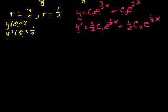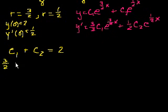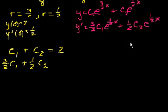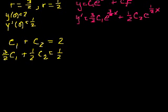Substituting x equals 0 into y: we get c1 times e to the 0, which is 1, plus c2 times e to the 0, which is 1, equals 2. So c1 plus c2 equals 2. Then substituting x equals 0 into the derivative: 3 halves c1 plus 1 half c2 equals 1 half. Now we have two equations in two unknowns, and we can solve them a number of ways.